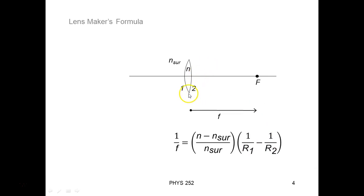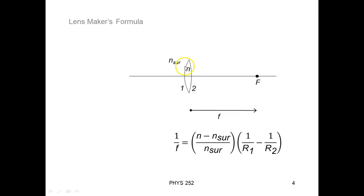So how do we define these radii of curvature? First of all, we need to make sure we know what we mean by surface 1 and 2. This left surface will always be surface 1, because we trace the light with an object on the left side, with light going left to right — the first surface that the light hits for a lens is going to be the left surface. I call that surface 1, and you may also hear me refer to that as the front surface. Surface 2 is the right surface, or I'll sometimes call that the back surface. To visualize radius R1, think of the sphere that surface 1 is part of, and R1 is the radius of that circle or sphere.